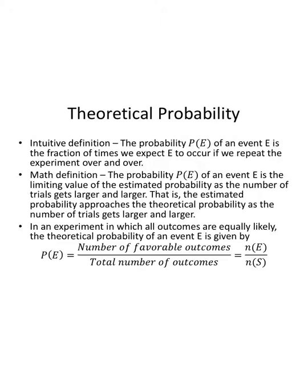Now the math definition. The probability P(E) of an event E is the limiting value of the estimated probability as the number of trials gets larger and larger. The estimated probability or experimental probability approaches the theoretical probability as you do more and more trials.